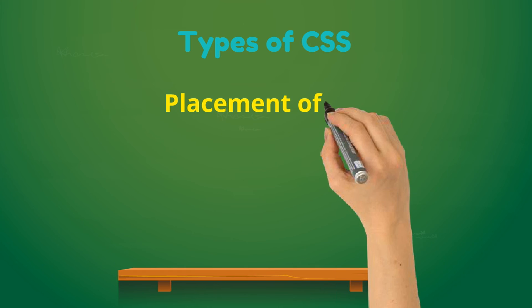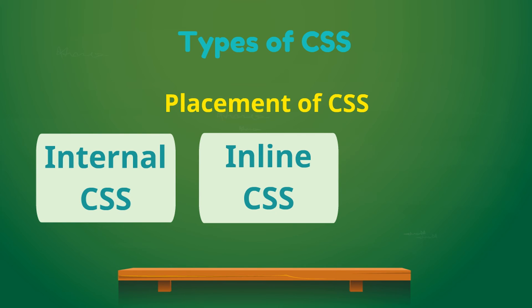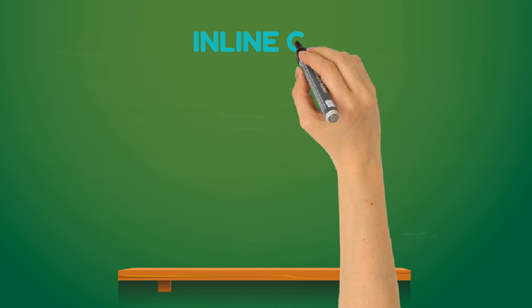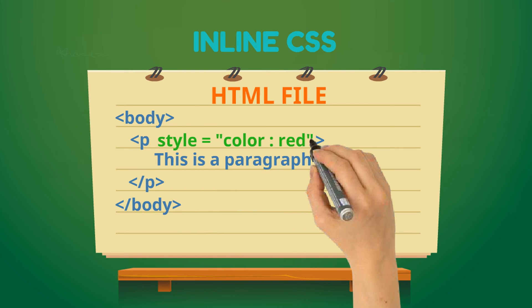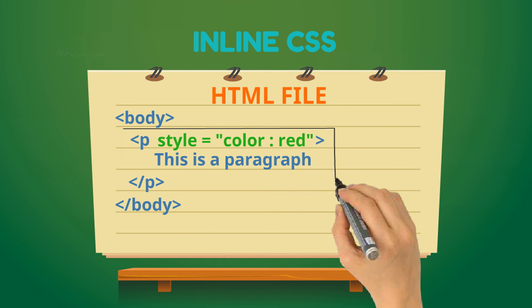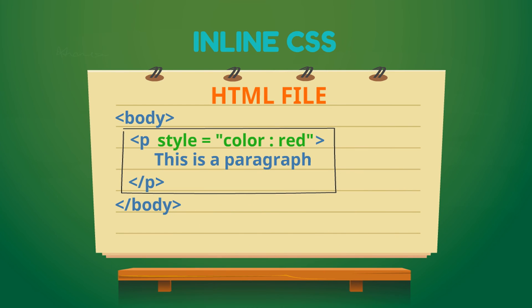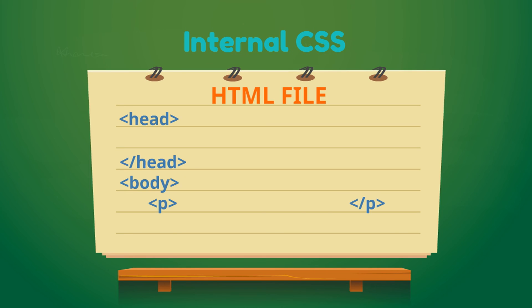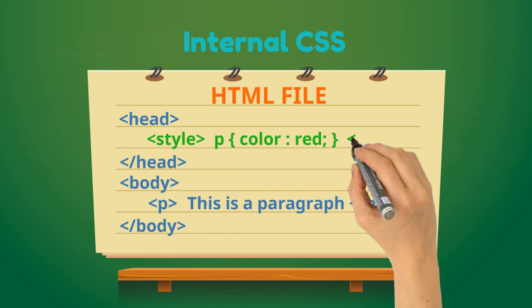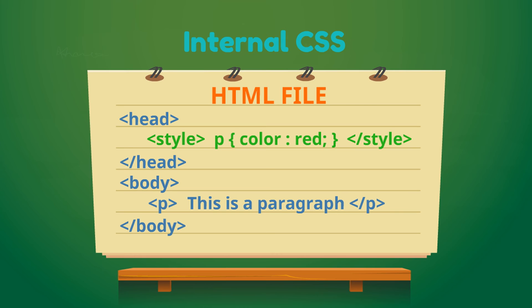Depending upon where we place the style rules, there are three types of CSS. First is inline CSS, which contains the CSS property in the HTML body section attached with an element. This kind of style is specified within an HTML tag using the style attribute. CSS can also be embedded in the HTML head section if a single HTML document must be styled uniquely — this is called internal CSS.